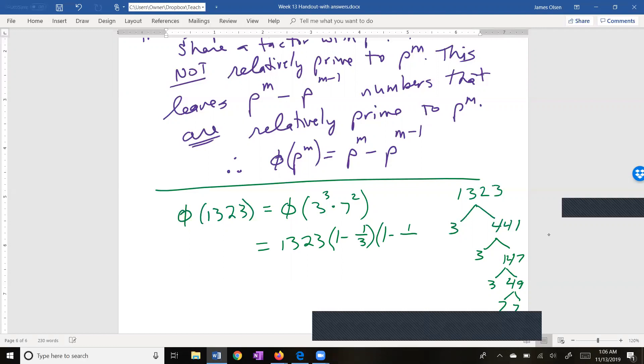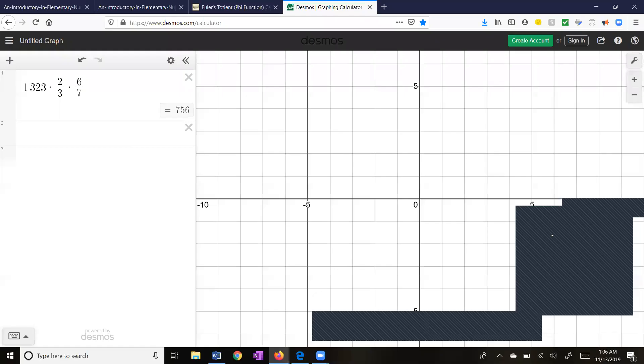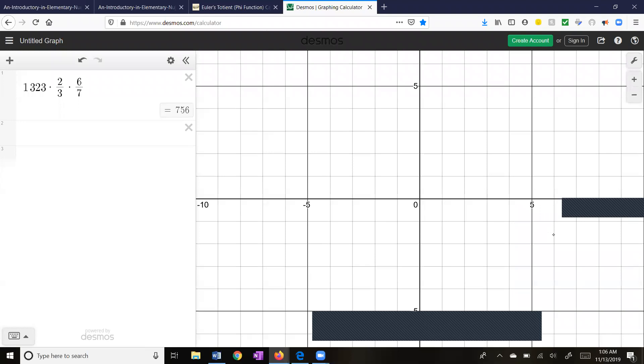Now using our theorem, out front we have our full number. Times 1 minus 1 over the first prime factor. Times 1 minus 1 over the second prime factor. A little bit of simplifying here. 1 minus 1 third is 2 thirds. 1 minus 1 seventh is 6 sevenths. And now we're going to run this into a calculator. I think I'll use Desmos. You can use your graphing calculator and you get 756.